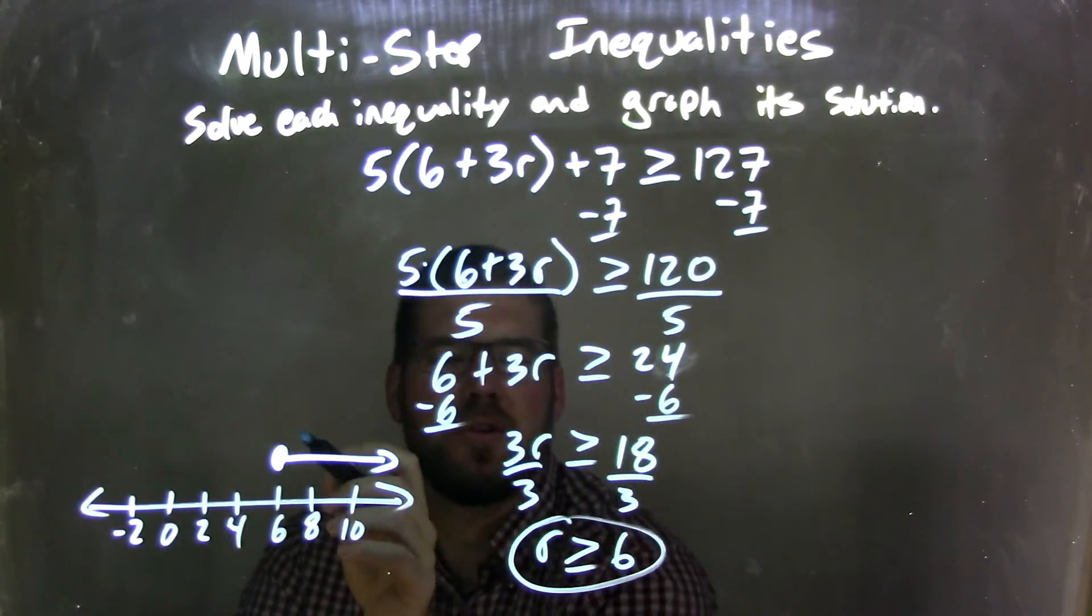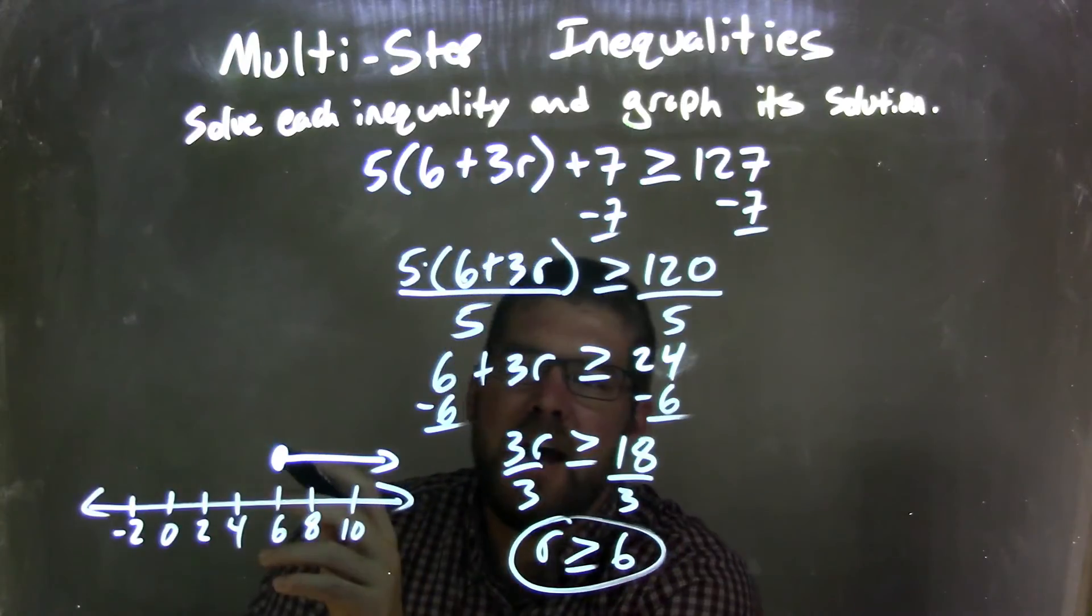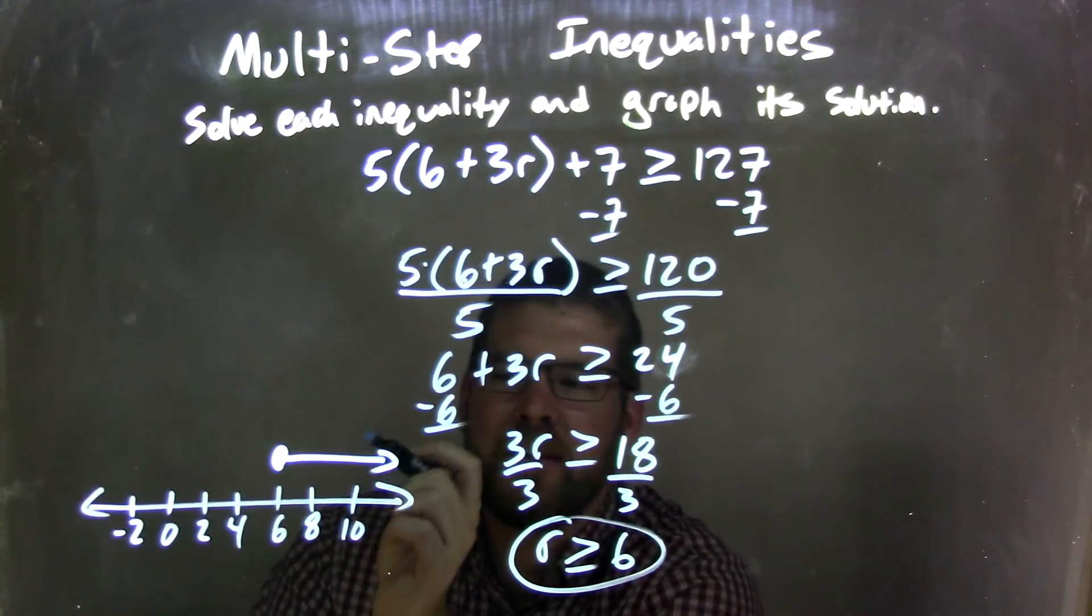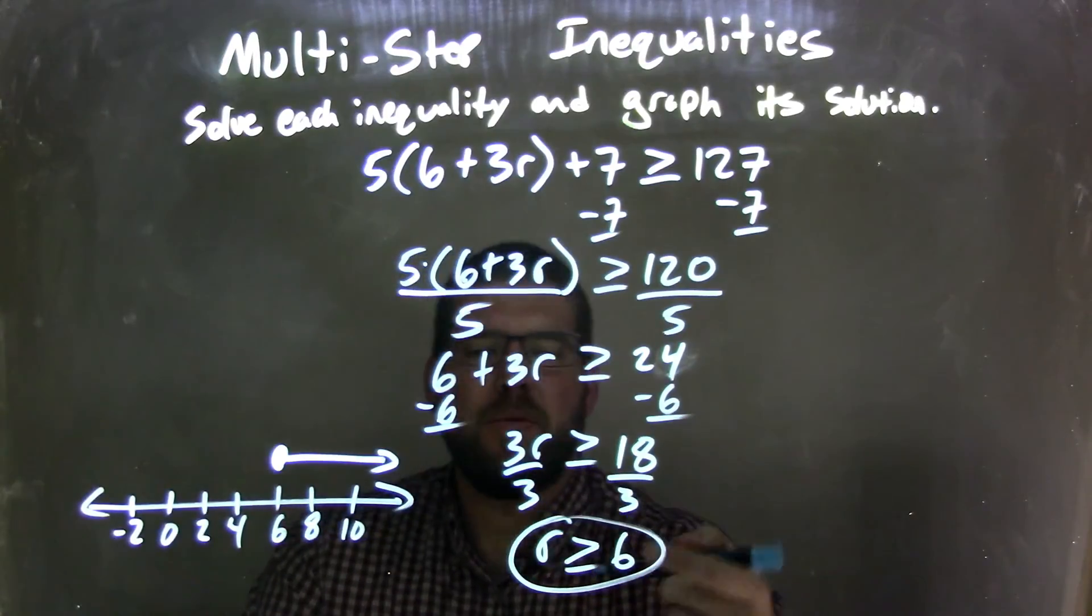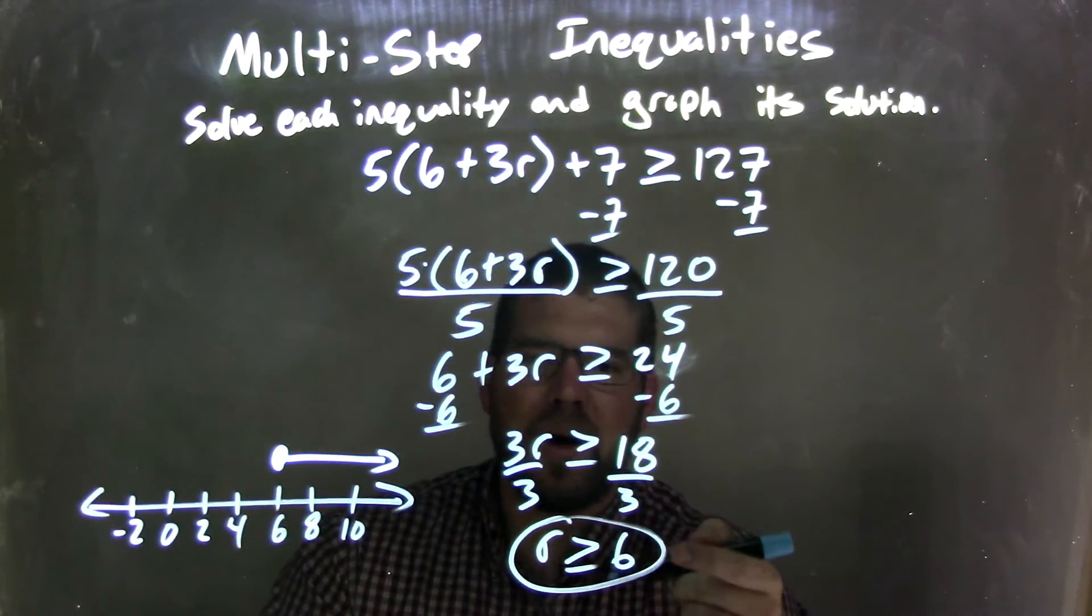We need to graph that. Closed circle at 6 because it can equal 6, and we put our arrow to the right because R can be greater than 6. So this graph now matches my overall final answer, which is R is greater than or equal to a positive 6.